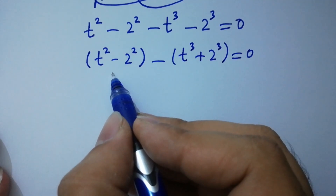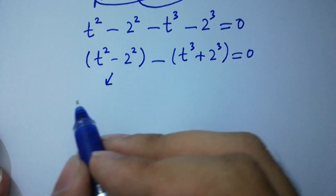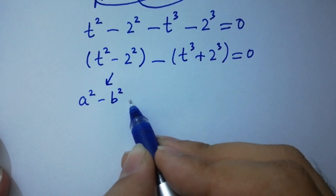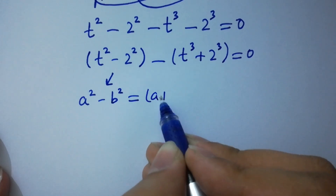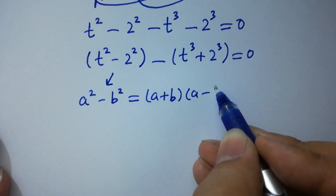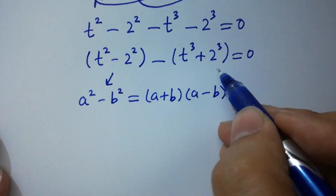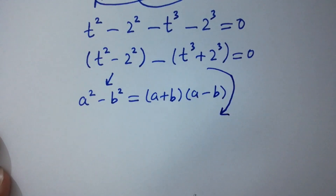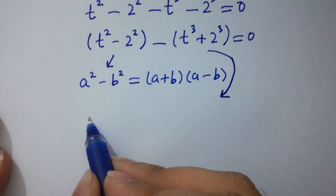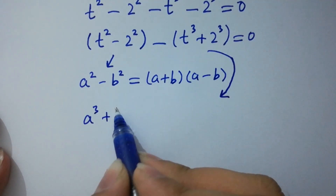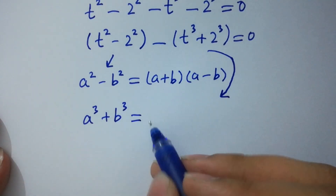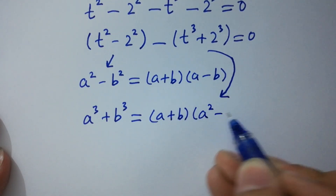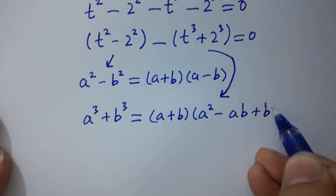I am going to apply the formula. This is the formula of a squared minus b squared, which is equal to a plus b times a minus b. And here t cubed plus 2 cubed has the formula of a cubed plus b cubed, which is equal to a plus b times a squared minus ab plus b squared.